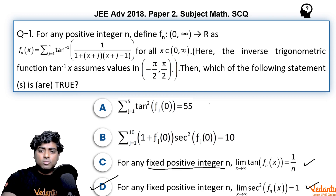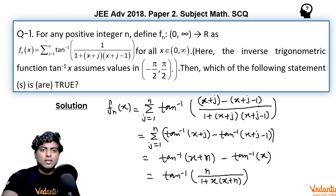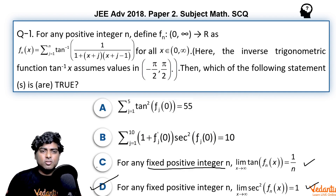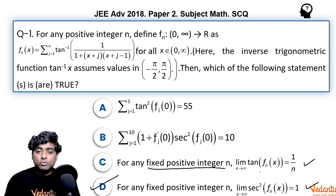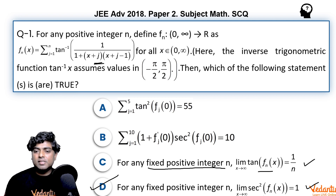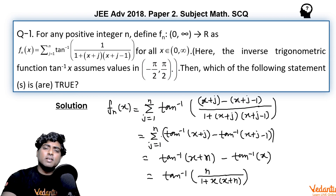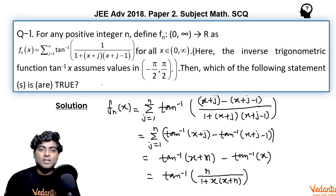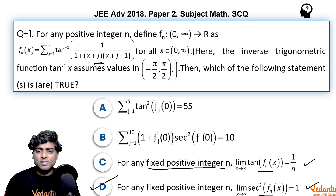If you think about it more directly: n is finite, so as x → ∞, you put infinity in the expression and you get 0 directly. Finite number of terms, each going to 0, so the sum is 0. Then sec²(0) = 1, so option D is correct. No need to find even the full value of the series — common sense works here, and nothing is better than common sense!